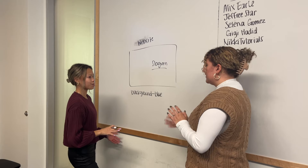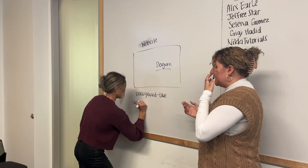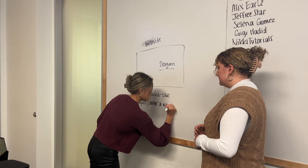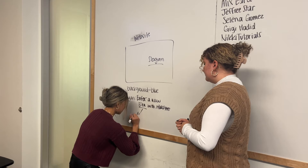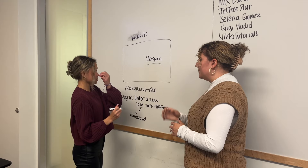I feel like we want to have something with the era, because of the Eras Tour — so maybe 'Enter a new era' with Morphe. And then maybe have 'era' italicized so that it stands out and stays recognizable. I also feel like we're missing something on the left, so maybe we could add a picture — like her tour picture, like her flyer.